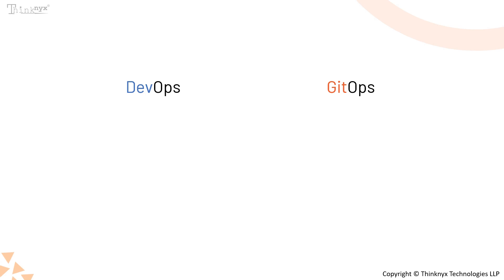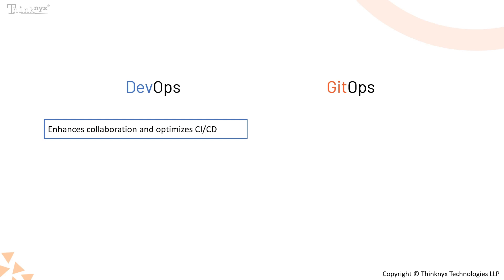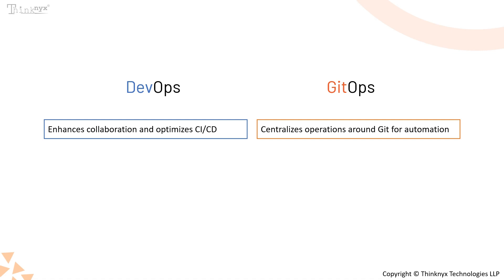How do DevOps and GitOps compare? First, we have philosophy. DevOps aims to break down silos, enhance collaboration between development and operations teams, and optimize the CI-CD pipeline. On the other hand, GitOps centralizes operations around Git as the single source of truth, with a strong focus on automating infrastructure management.